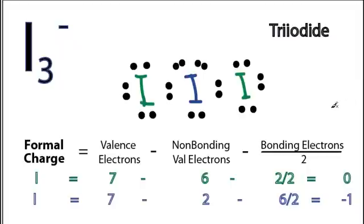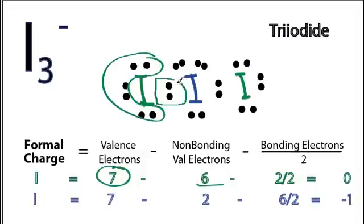So the two iodines on the outside, the ones in green, let's do those first. They're the same, so they'll have the same formal charge. On the periodic table, iodine's in group 7. It has 7 valence electrons. Nonbonding, these right here that are not involved in chemical bonds, we have 6. And then bonding, we have 2, but we'll divide that by 2. 7 minus 6 minus 1 gives us 0.